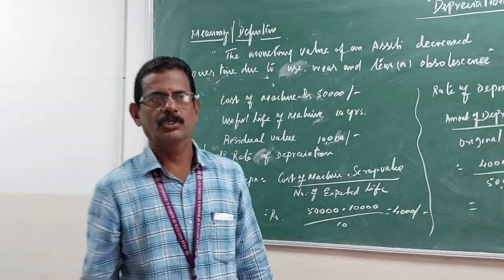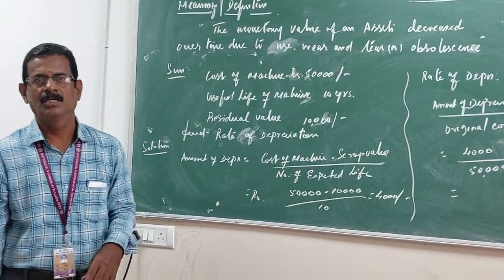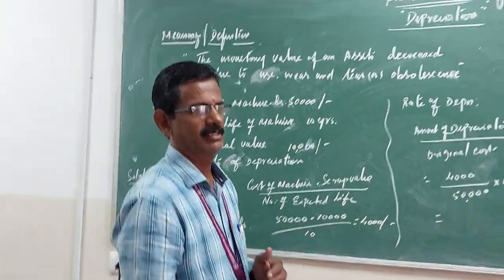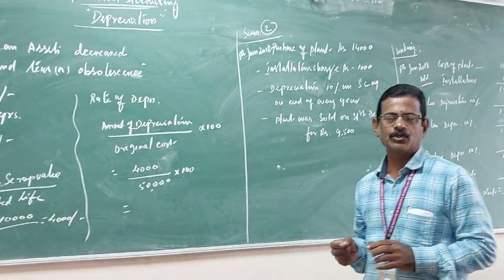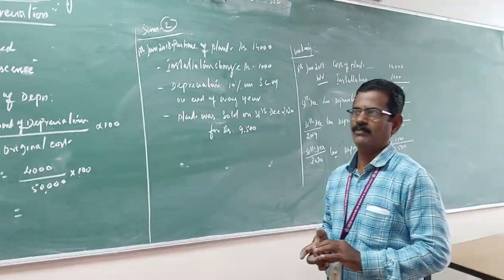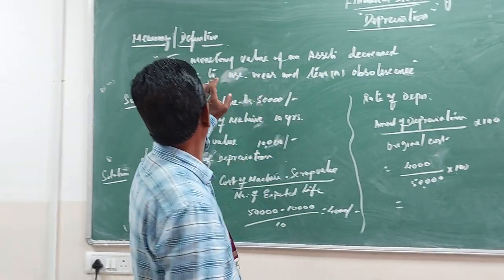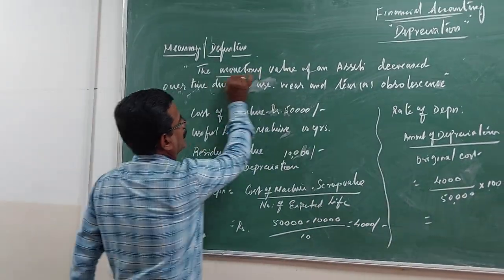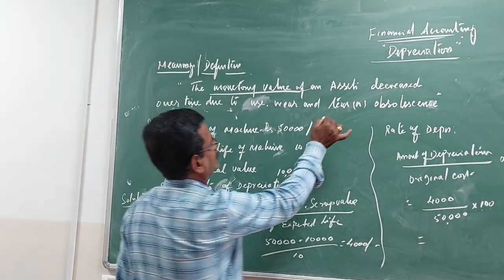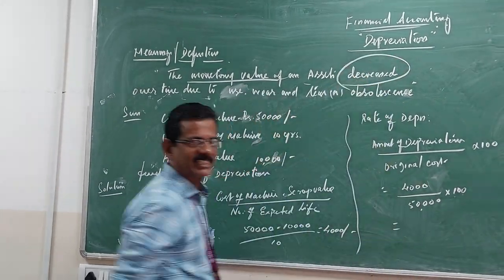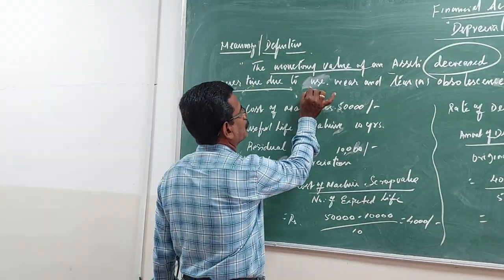We are going to discuss depreciation. Simply said, depreciation is the value of a fixed asset that should be reduced. Depreciation is the monetary value of an asset — the value of the asset should be decreased over time through use.